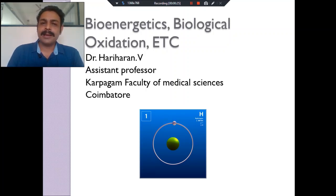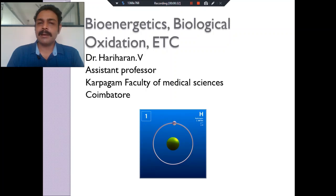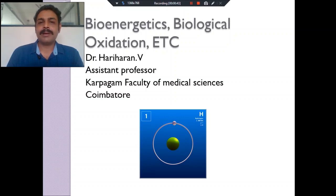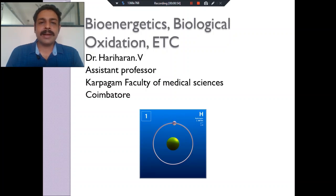So here, in the body, how do we get energy from the foodsteps? What are the foodsteps? Carbohydrates, proteins, and fats. They mostly contain carbon, hydrogen, and oxygen. We don't obtain energy by burning carbon — we cannot burn carbon inside our body. We are burning hydrogen. Hydrogen plus oxygen gives water, and this is a highly energy-producing process. So we call it biological oxidation.